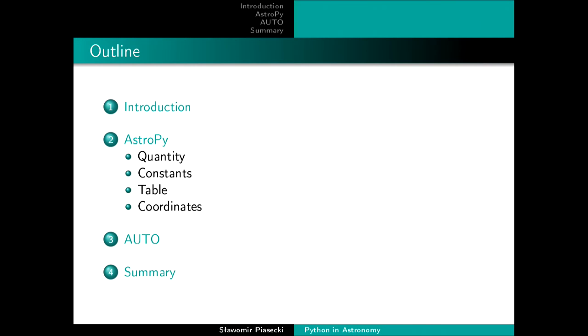So what I would like to talk about today will be three points: an introduction with a brief history of Astronomy, a description of the AstroPy package — dedicated for astronomers and astrophysicists, containing most of the important models and methods used in Astronomy — and finally Auto, a hybrid Python and Fortran software that I used during my research.